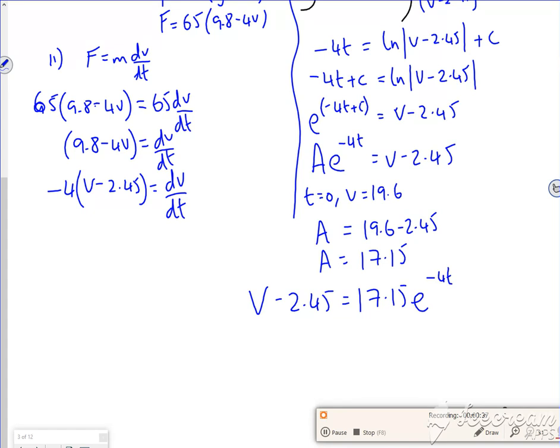So my equation is v minus 2.45 is 17.15 e to the minus 4t. So then if I take the 2.45 over, I get exactly what they want for the answer, which is 17.15 e to the minus 4t plus 2.45.